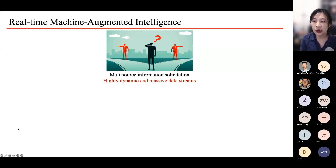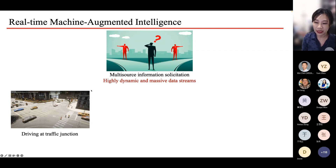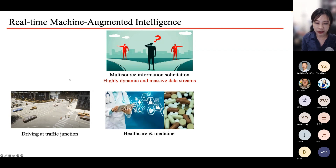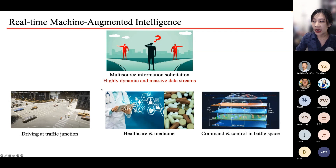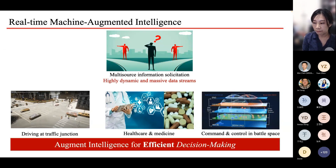I want to start by motivating this kind of real-time machine-augmented intelligence. We live in the era of information deluge. Even the smartest can be overwhelmed by the highly dynamic and massive data streams we have to keep up with to make informed decisions — whether it's everyday life like driving at a very busy traffic junction, a high-priority task like healthcare and medicine, or even in extreme cases like command and control in a battle space.